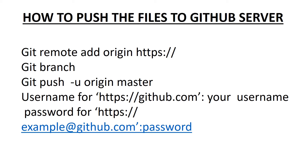Once you create your repository, you'll see a couple of commands — the first is for creating the repository using the command line, and the second is for pushing to the repository through the command line. We're going to use the second one. You'll see: git remote add origin, then a link. Copy that into your Termux command line, then type git push.